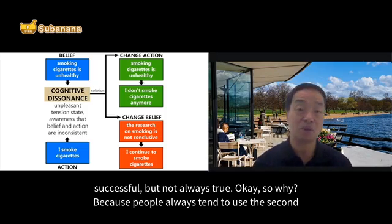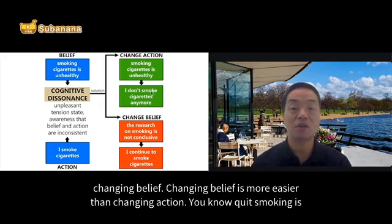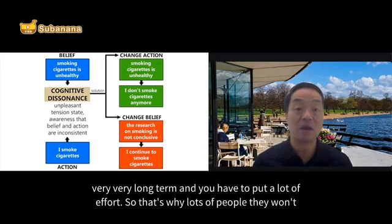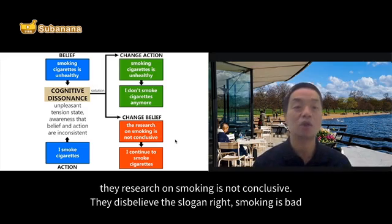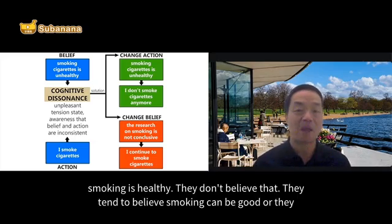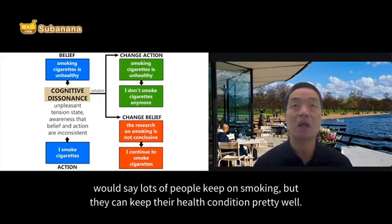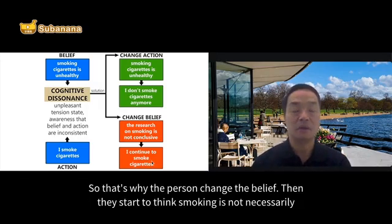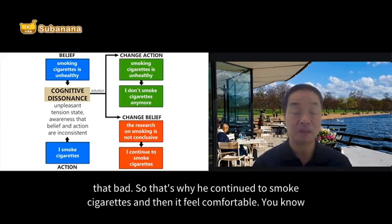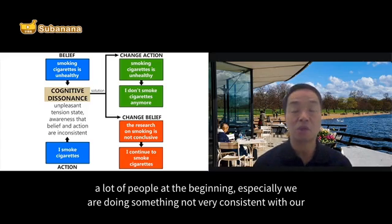But that's not always true, because people tend to use the second option — changing their belief — which is much easier than changing their action. Quitting smoking is very long-term and requires a lot of effort. So many people choose to change their belief downward instead: they think the research on smoking is not conclusive, they disbelieve anti-smoking slogans, or they tell themselves a lot of people keep smoking and still maintain good health. So the person changes their belief, starts to think smoking is not necessarily that bad, and continues to smoke while feeling comfortable again.